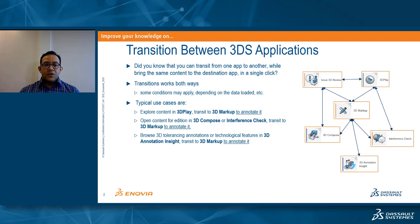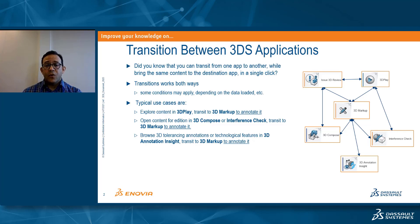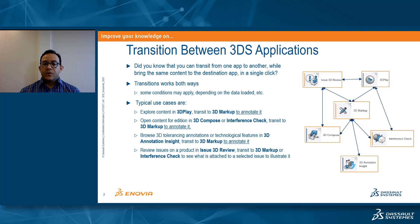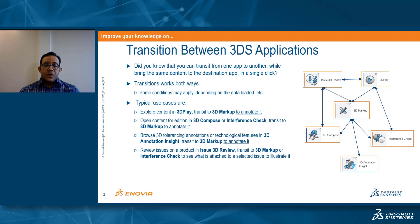Another way is to use the 3D tolerancing annotations or the technological features available in 3D annotation and annotate that content inside 3Dmarkup, or when reviewing an issue using Issue 3D Review — an app that lets me look at issues on the product from a 3D point of view. This content may have concerns which I would like to explore in 3Dmarkup and save in the platform for further analysis. This way I can transit from Issue 3D Review to 3Dmarkup.